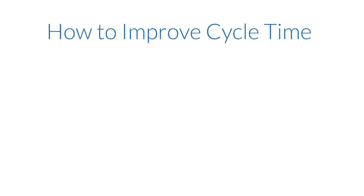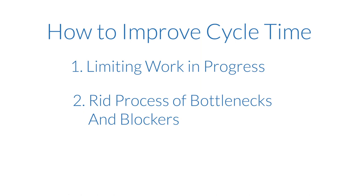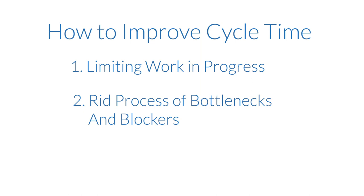Here are three ways to reduce your cycle time. One, limiting work in progress. Two, speed up work by ridding your process of bottlenecks and blockers. Three, classify items on your board into groups or classes of service, since there may be variation in different types of work. For example, coding a new software feature will typically have a longer cycle time than fixing a minor bug.